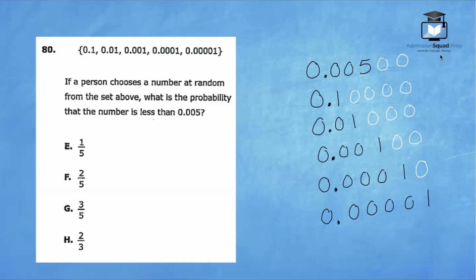This number is considered 500, this number is considered 10,000, this number is 1,000, this number is 100, 10, and 1. And we want to identify the numbers that are less than 0.005. So 10,000 is not less than 500, 1,000 is also not less than 500, but 100 is definitely less than 500. So is 10, and so is 1. So we can see that three out of the five numbers are less than 0.005. So the correct answer is choice G.